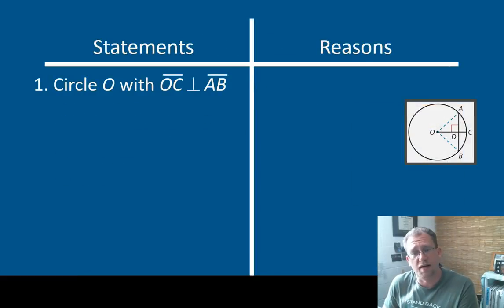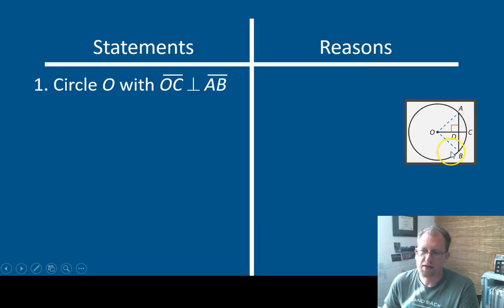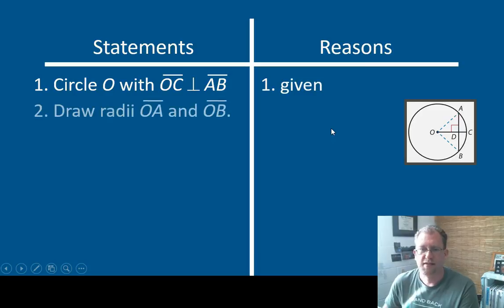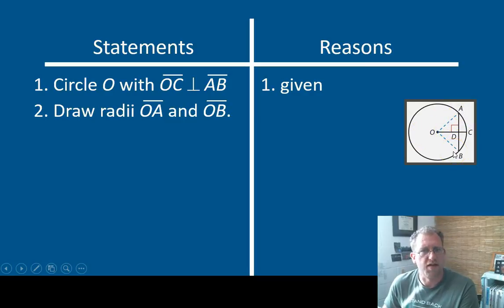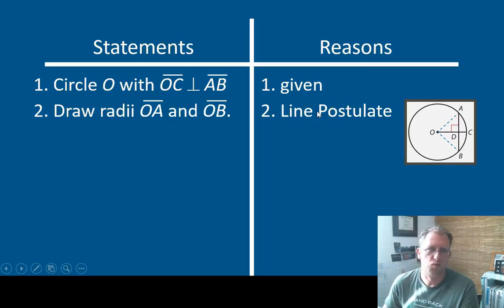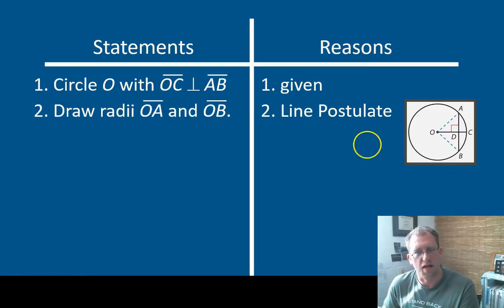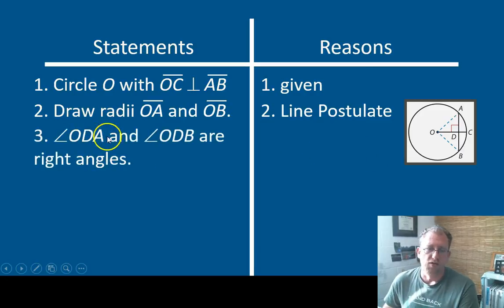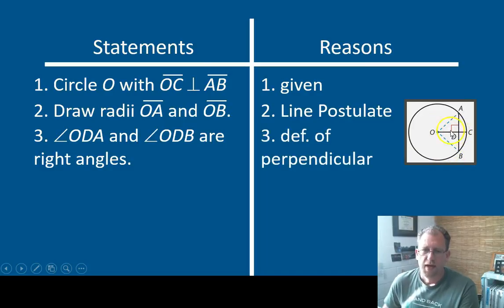So let's do a proof with that together. Circle O with OC perpendicular to AB. AB is a chord and OC is a radius — that's given. We're going to draw two more radii, OA and OB. We've just created ourselves an isosceles triangle. We're just drawing those lines — you could also say auxiliary line. Angles ODA and ODB are right angles — that's given to us, and that's just the definition of perpendicular.